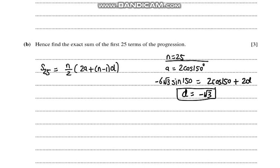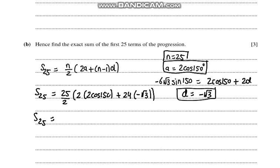So our d is -√3, our first term is 2cos(150), and our n is 25. So our sum of 25 terms becomes 25/2 times (2 times 2cos(150) + 24 times (-√3)). The sum of 25 terms becomes 25 times (-√3).